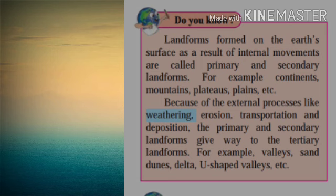In those movements, we saw how block mountains, fold mountains, and rift valleys are formed due to the internal movements of the earth. This internal movement of the earth also gives rise to primary and secondary landforms — continents, mountains, plateaus, and plains. Because of the external processes like weathering, erosion, transportation, and deposition, the primary and secondary landforms give way to the tertiary landforms. Tertiary means third.